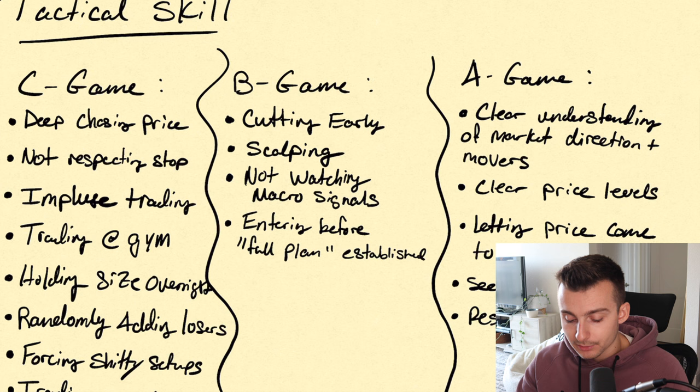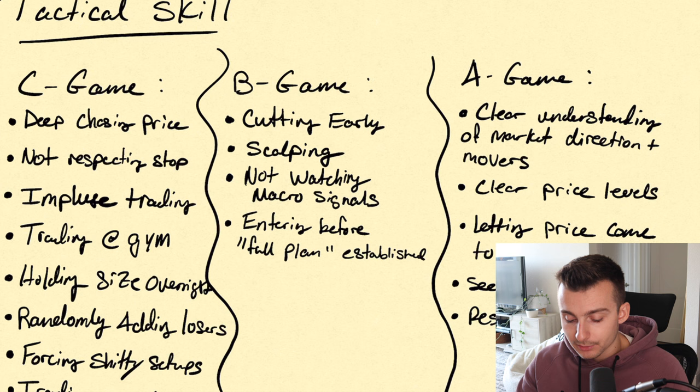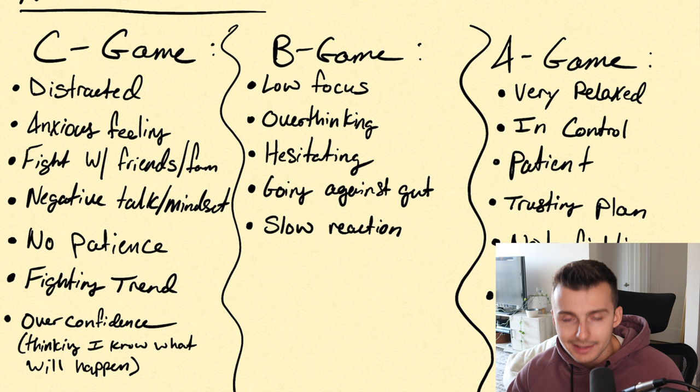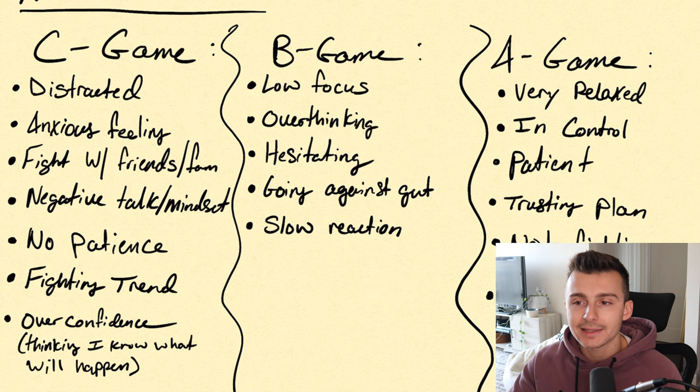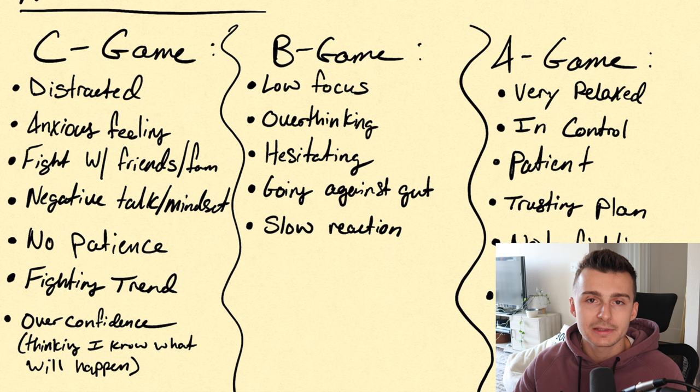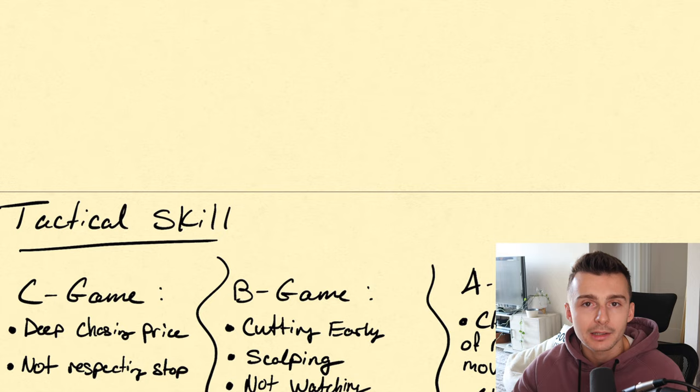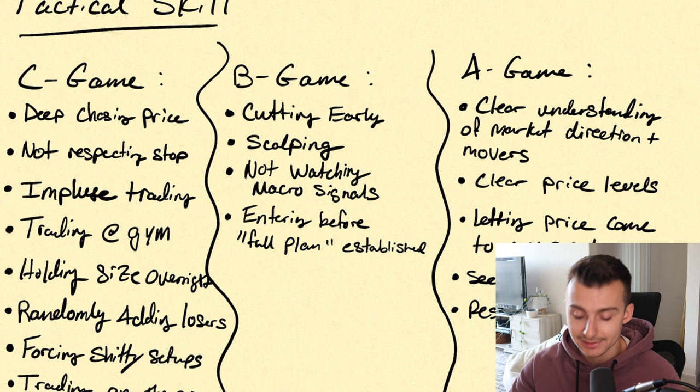Speaking of the technicals, let's talk about the tactical skills. What you're realizing is that we have a lot in the C game, and that's actually good — it's not a bad thing because it allows you to actively eliminate and work on those things so you can move that bell curve forward. The whole point is sucking less, having less in the C game, making fewer mistakes. So, what's some C game from a tactical perspective?